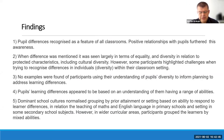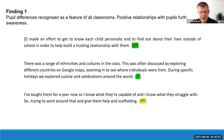Our findings provide concrete examples of how participants made sense of pupil differences while learning to enact inclusive pedagogy in high-poverty school environments. We highlight five key findings. First, pupil differences were recognized by most participants as a feature of all classrooms, and awareness was further developed by fostering positive relationships with pupils. Illustrative quotations included: 'I made an effort to get to know each child personally and to find out about their lives outside of school.' A student teacher noted a range of ethnicities and cultures in the class, explored through Google Maps and celebrations from around the world.